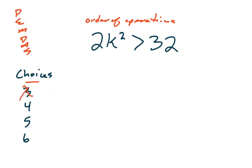Let's try 4. This would be 2 times 4 squared is that greater than 32. Well, 4 squared is 16. So 2 times 16, oh no, that equals 32. But we need it to be greater than 32. So 4 doesn't work.